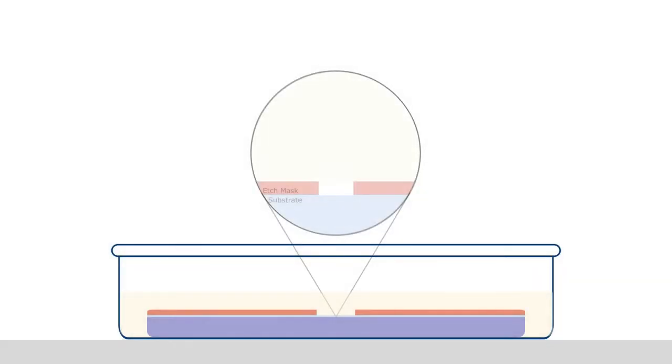However, wet etching is isotropic, which means it etches the same in every direction. This means that as you etch, you end up with a hemispherical etch profile and get a large undercut to your features. This can cause problems if you need specific high aspect ratio features, like posts or trenches.